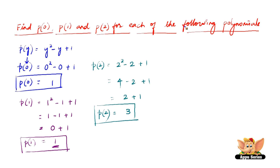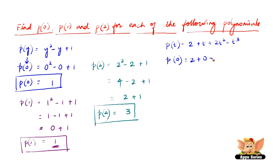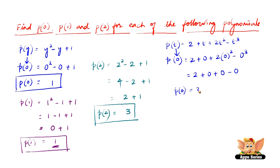Let us go to another expression. p of t this time equals 2 plus t plus 2t squared minus t cubed. The first one is p of 0. If p of t is 2 plus t plus 2t squared minus t cubed, then p of 0 will be 2 plus 0 plus 2 into 0 squared minus 0 cubed. When we substitute 0 in the place of t, 0 squared is 0, 2 into 0 is 0, and 0 cubed is 0 as well. So p of 0 is 2.